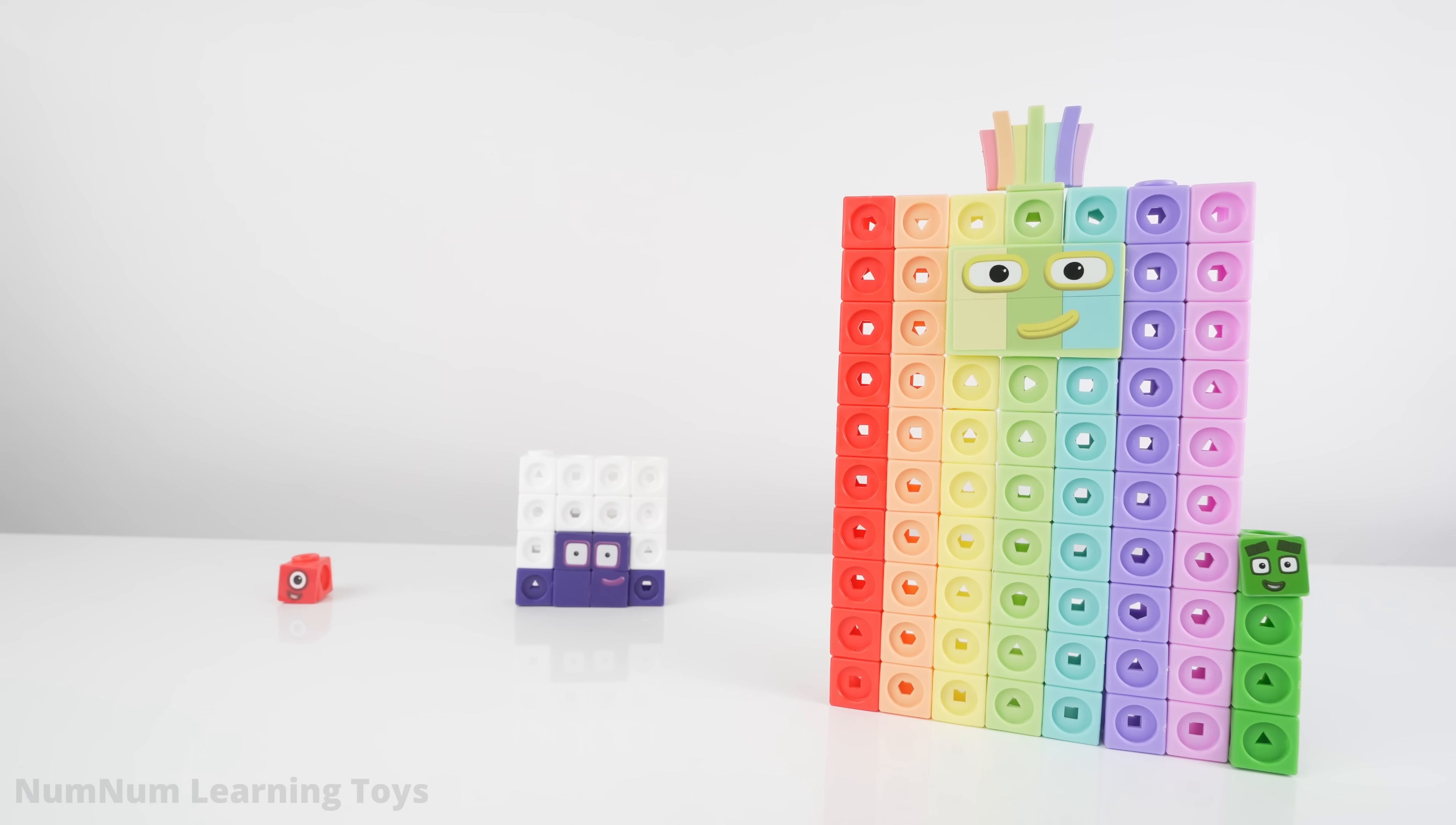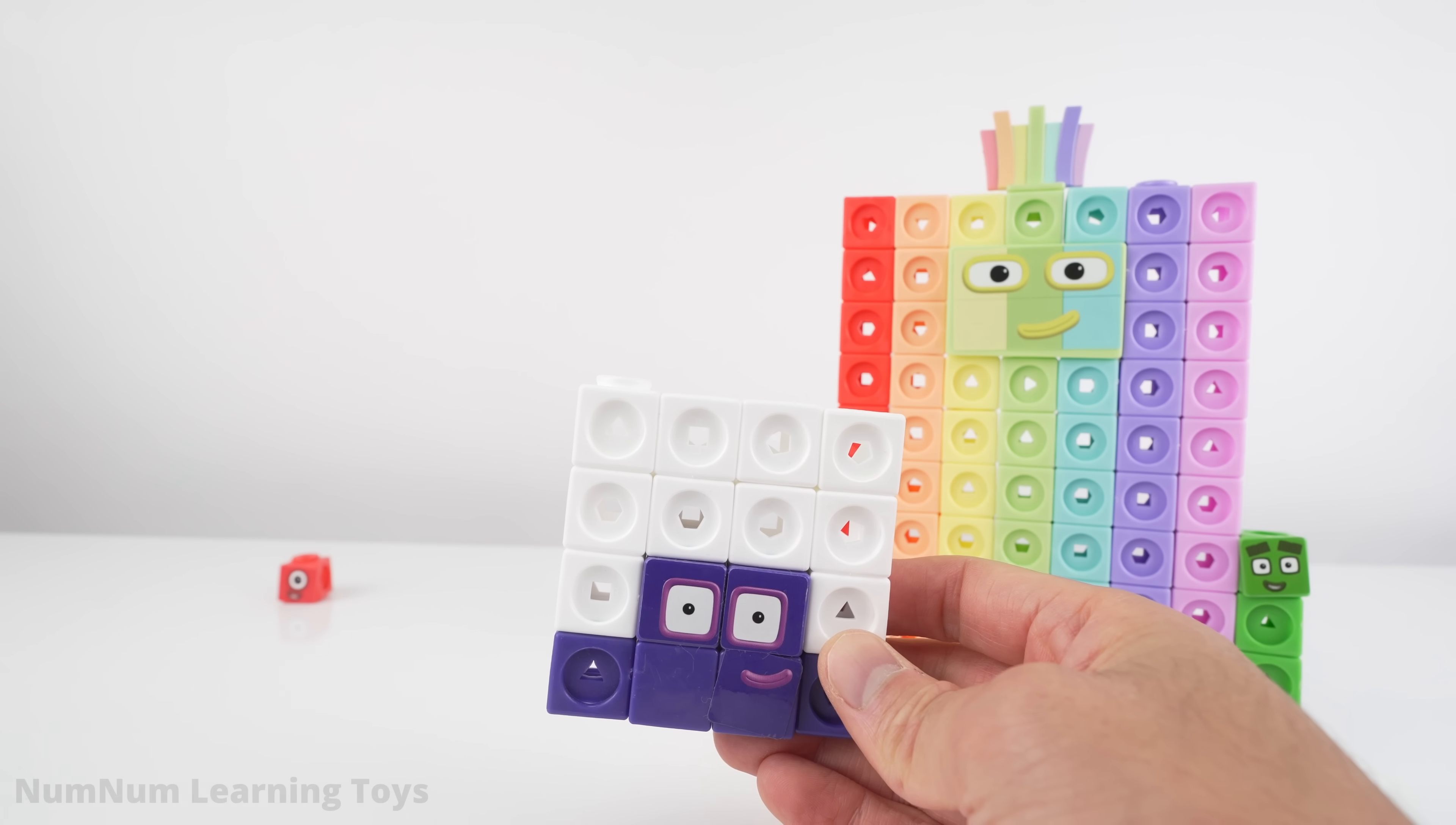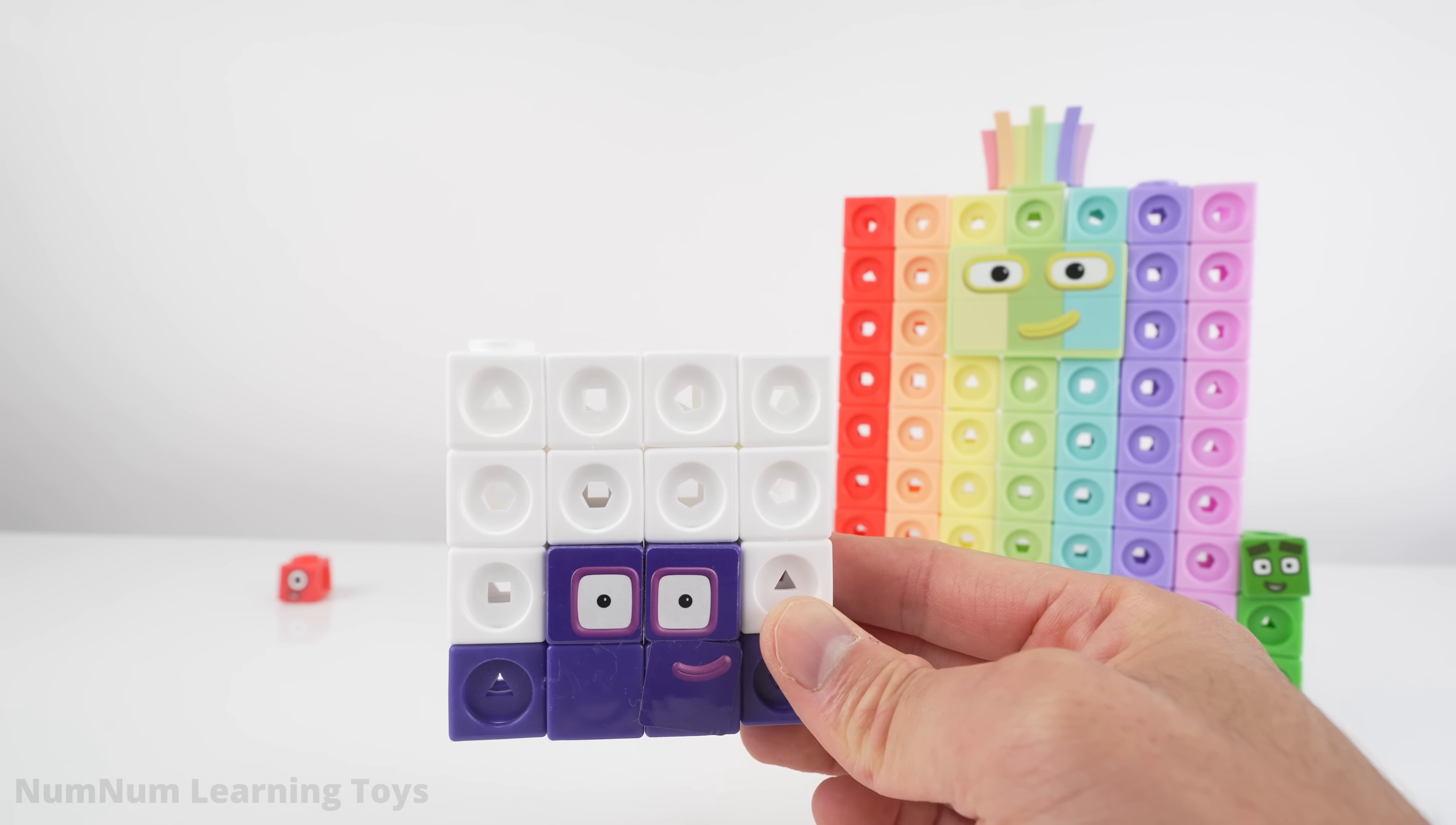It's time to add another square. How about this one? Number sixteen. Sixteen is four units tall and four units wide. Four by four. That's sixteen.